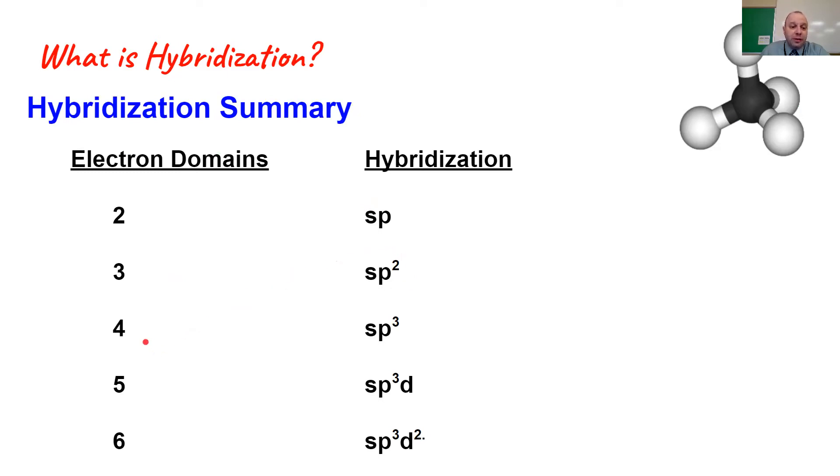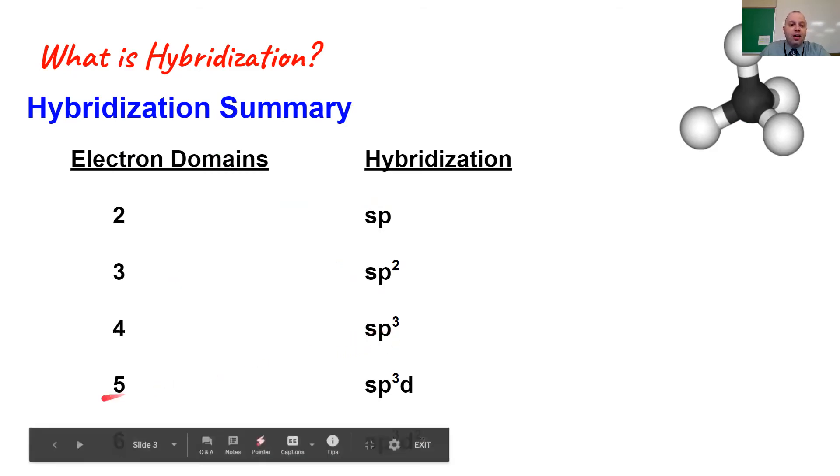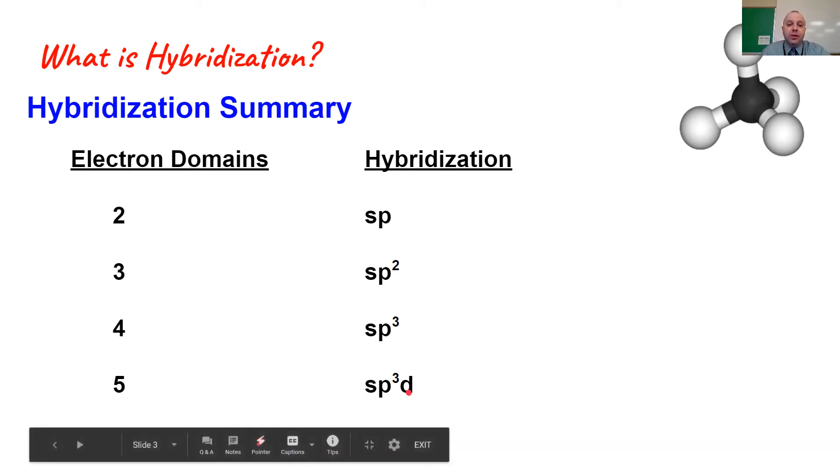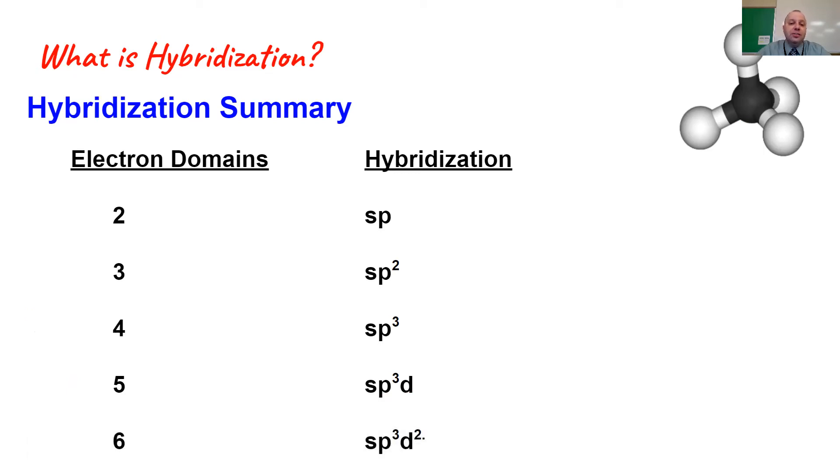We have four electron domains, we put in one s and three p's. Now when we get up to five electron domains, some students want to say sp4, but remember the p sublevel only has three orbitals, so we can't go up to sp4. Instead, we pull an orbital from the d sublevel, so we have sp3d if we have five electron domains, and finally if we have six electron domains, we wind up with sp3d2.